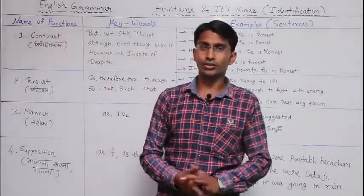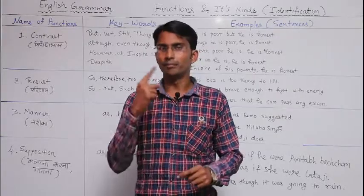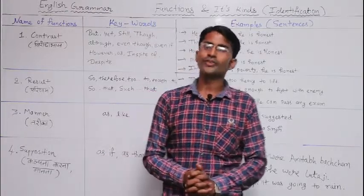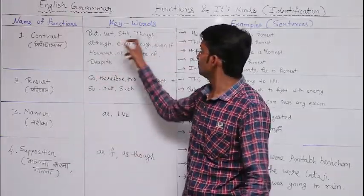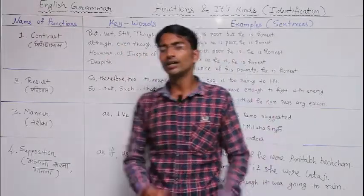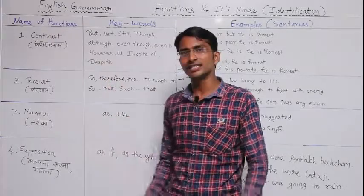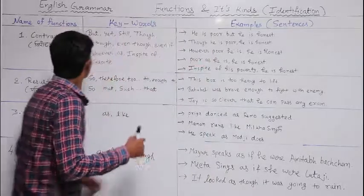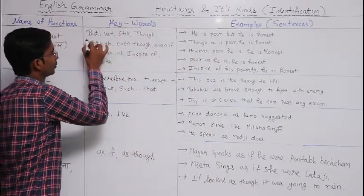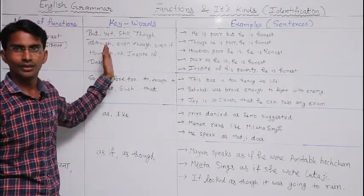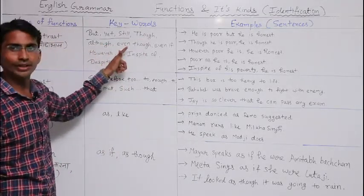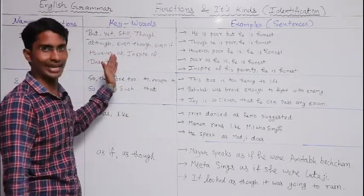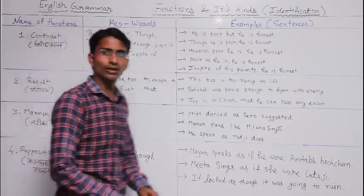The keywords of the contrast function include: but, yet, still — these three are common. Then: though, although, even though, even if — these four are also common. Next: however, as, in spite of, and despite. So these are all the keywords that show the contrast function.